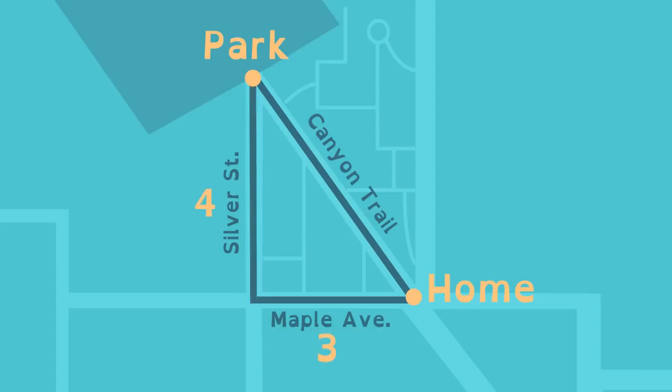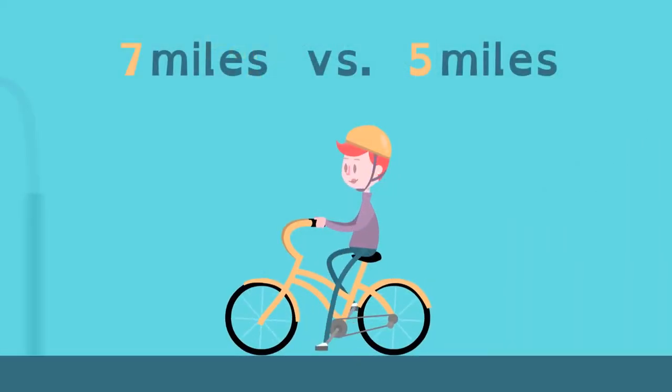Applying the Pythagorean Theorem, 3 squared plus 4 squared equals 25. She knows that 5 squared is 25, so the hypotenuse, the length of Canyon Trail, is five miles. Two miles less of biking for Lucy.